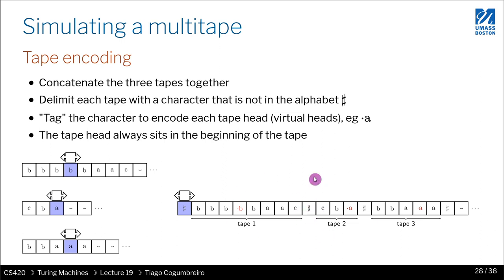If you have to move right past the separator, what you need to do is the Turing machine that is simulating the multi-tape Turing machine. What it needs to do is, it needs to move all of these characters until the end of the third tape, move out everyone one position to the right.